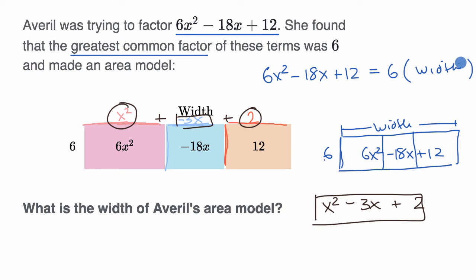And you could substitute that back in for this, and you could see if you multiplied 6 times all of this, if you distributed the 6, you would indeed get 6x² - 18x + 12.